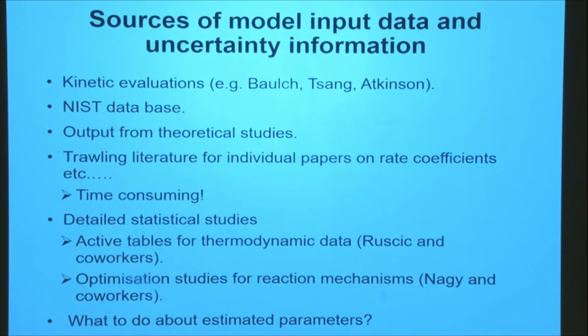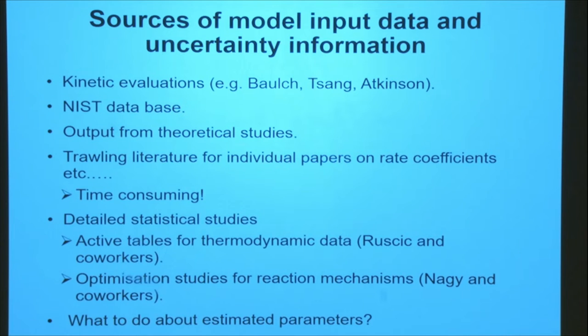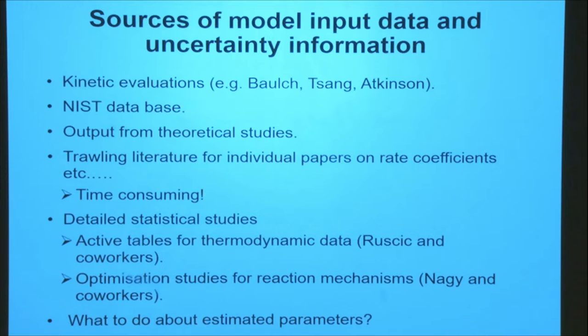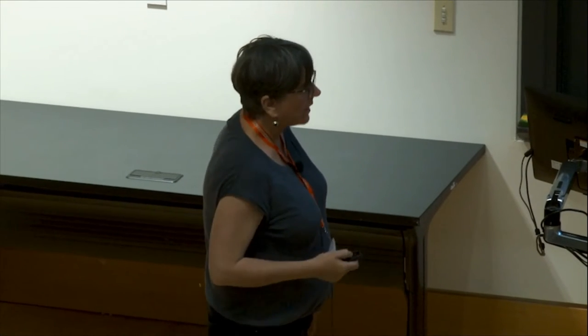More and more, although not as commonly as you might like, theoretical studies are giving estimates of the uncertainty and the predictive value. Otherwise, if you're putting together a mechanism and you want to propagate uncertainties, sometimes you have to trawl the literature for individual papers and just put the information together yourself. I find it is a tedious job, and people who are constructing mechanisms — I would like to see these features as well in generators like RMG — give us uncertainties on the data being produced with the mechanism. I have been trying to get that message out for quite a long time, and people say yes, that's a great idea, and then the next time they produce a mechanism, you don't really see it there.